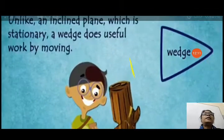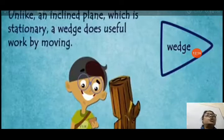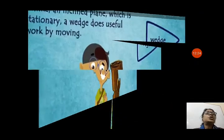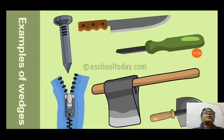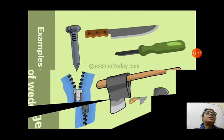Unlike an inclined plane, which is stationary, a wedge does useful work by moving. When the wedge is in motion it performs the work. Examples of wedges seen in this picture include an axe, knife, nails, and many other tools we use in our daily life.